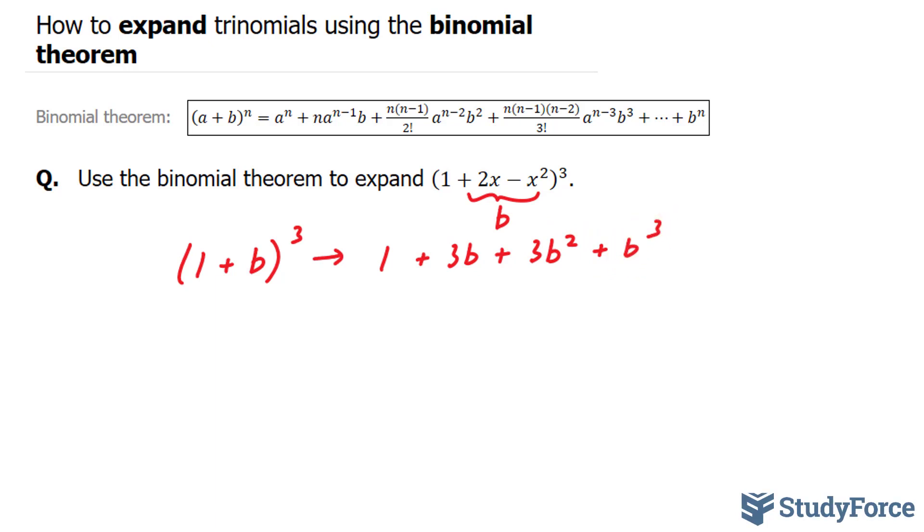Now that you've expanded this using the binomial theorem, you can replace back the b's with what you set them to. So this becomes 1 + 3(2x - x²)